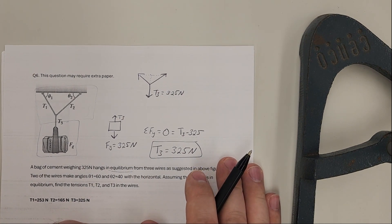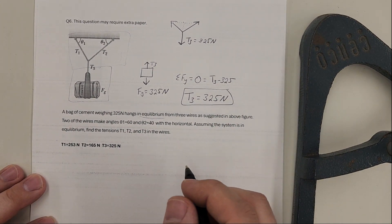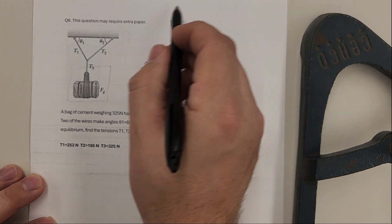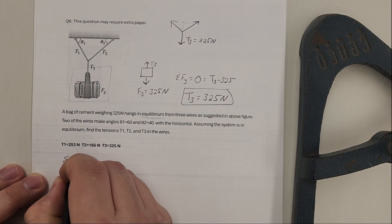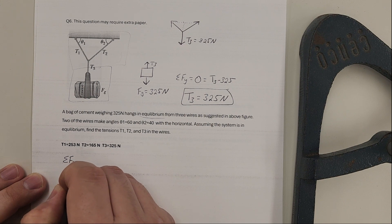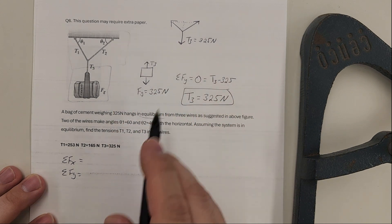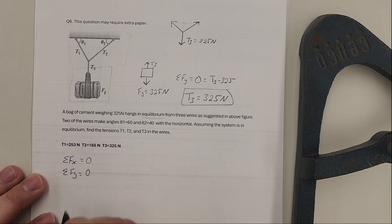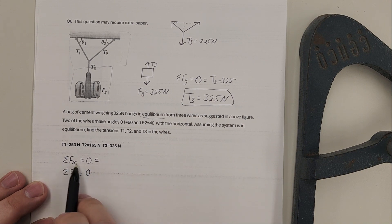If I look at my sum of the forces for this diagram, I'm going to have sum of the forces in the x and sum of the forces in the y. And again, we're in equilibrium - even these ropes aren't moving at all, so these are both zero.